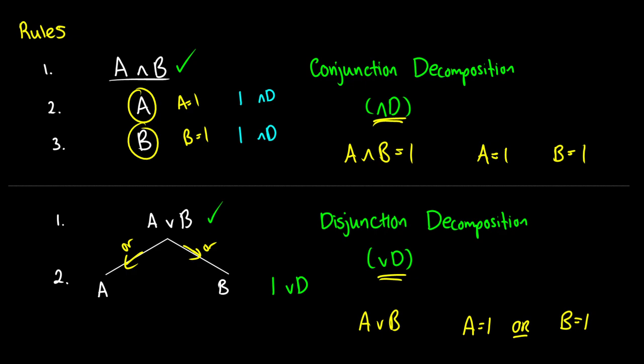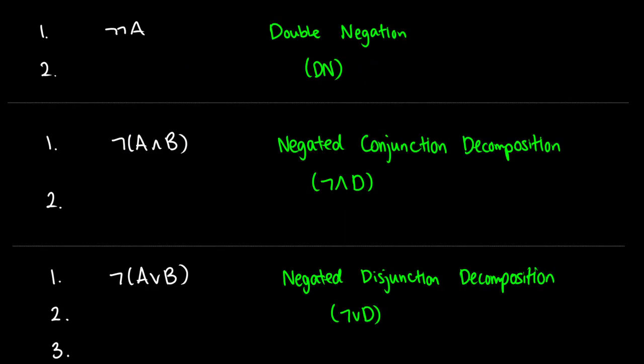When we add negation, it's important to understand how the truth values work so we can internalize these rules. If we have double negation — not not A — we just get A out of it, and we call this 'dn' for double negation. So not not A gives us A, justified by citing the line and 'double negation.' That's a fairly straightforward rule.